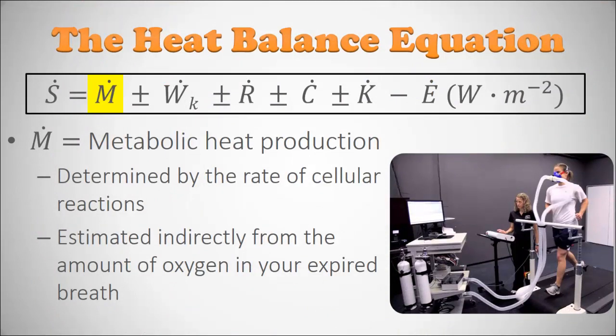The first term on the right is M — metabolic heat production. This is determined by the rate of cellular reactions in the body, the inefficiency of cellular reactions generating all the heat that makes your body temperature what it is. We can measure this in our laboratory at Salem State University by measuring the amount of energy dispersed in your expired oxygen, using a face mask with tubes that allow you to collect and analyze exhaled air for oxygen content, ultimately calculating how much energy and heat you're generating.